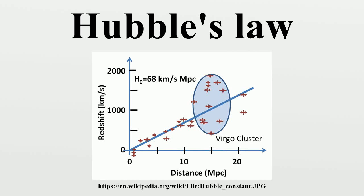Hubble's law is the name for the observation in physical cosmology that objects observed in deep space are found to have a Doppler shift interpretable as relative velocity away from Earth. This Doppler shift measured velocity of various galaxies receding from the Earth is approximately proportional to their distance from the Earth for galaxies up to a few hundred megaparsecs away. Hubble's law is considered the first observational basis for the expansion of the universe and today serves as one of the pieces of evidence most often cited in support of the Big Bang model. The motion of astronomical objects due solely to this expansion is known as the Hubble flow.